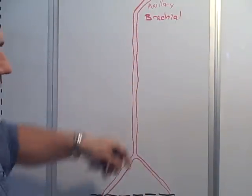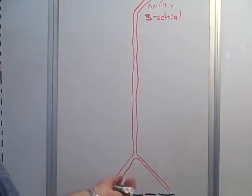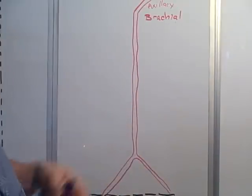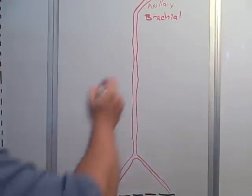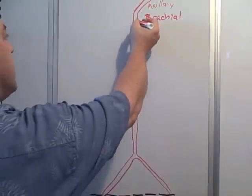Four collateral arteries go down and four recurrent arteries come up and anastomose together with the collateral arteries.